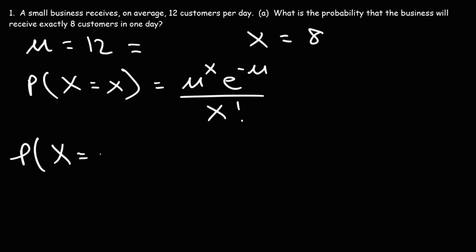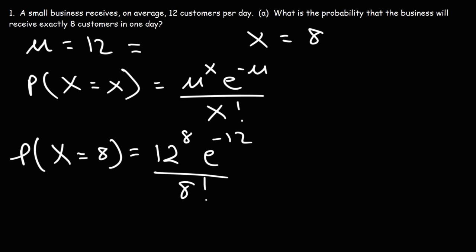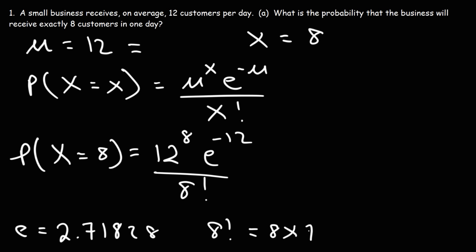Let's replace lowercase x with 8. So this is going to be 12 raised to the 8th power, times e to the negative 12, divided by 8 factorial. Keep in mind that e is the inverse of the natural log function — it's basically the number 2.71828. And 8 factorial is 8 times 7 times 6 times 5, all the way down to 1.